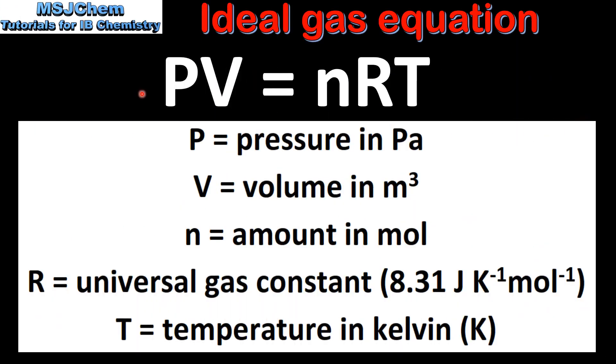So here we have the ideal gas equation PV equals nRT. When using the ideal gas equation it's very important to use the correct units. P is the pressure in Pascals, V is the volume in meters cubed, n is the amount in moles, R is the universal gas constant which is 8.31 joules per Kelvin mole, and T is temperature in Kelvin.